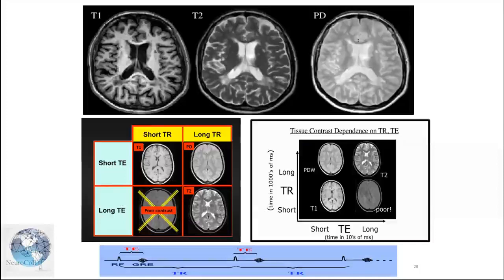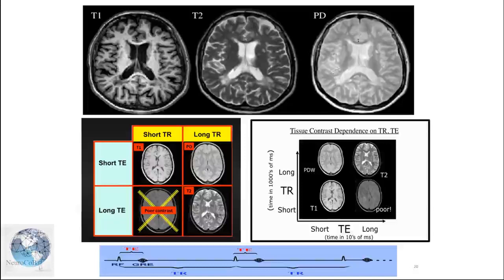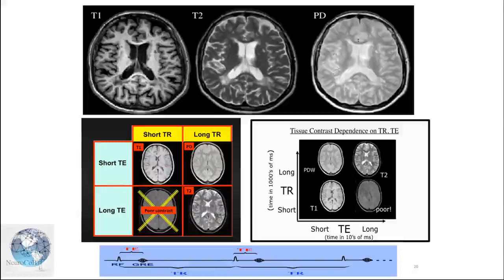In MRI we have T1-weighted, T2-weighted, and various other sequences including FLAIR. MRI uses parameters called TR — time to repeat — and TE — time to echo. The machine produces a radiofrequency pulse that you can hear, and it affects our water molecules. Our water molecules align according to the very strong magnetic field in the MRI scanner, but our body is not distorted. When the radiofrequency pulse is given, the alignment shifts from longitudinal to transverse magnetization — the molecules become excited.